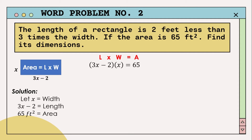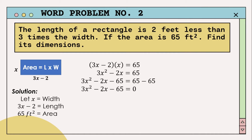The formula to get the area of a rectangle is length times width, so we substitute the expressions: quantity (3x minus 2) times x equals 65. Multiplying everything out, 3x times x is 3x squared, and negative 2 times x is negative 2x, so the equation becomes 3x squared minus 2x equals 65. Now set the equation equal to zero by applying the subtraction property of equality, giving us 3x squared minus 2x minus 65 equals zero.